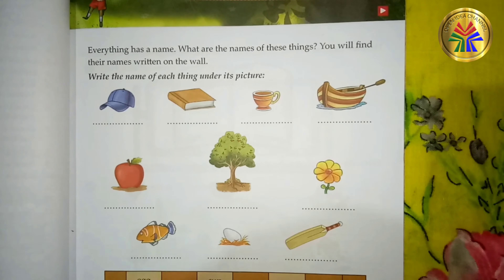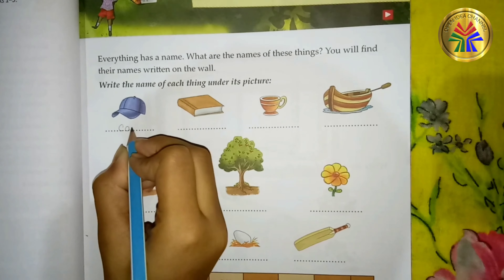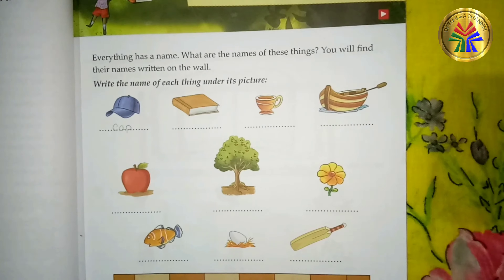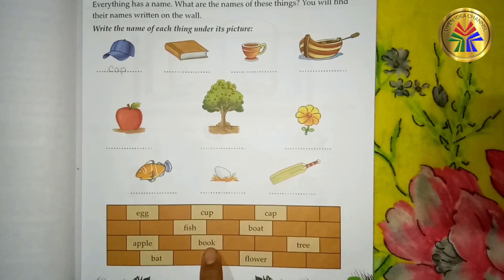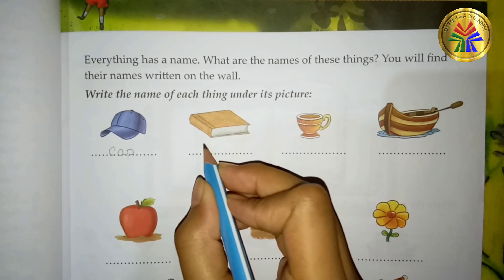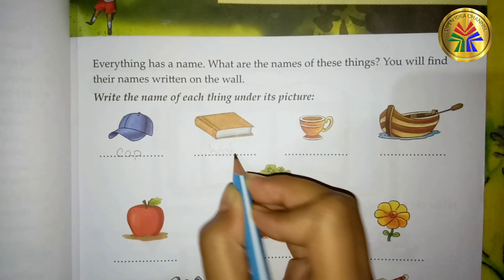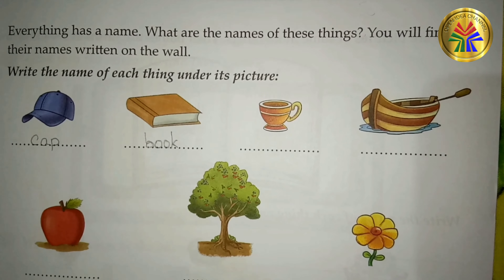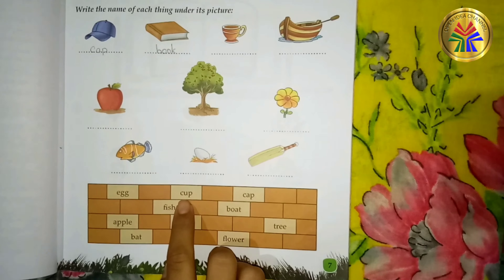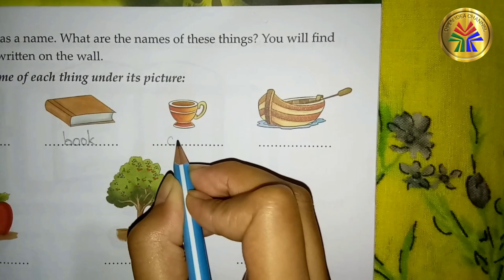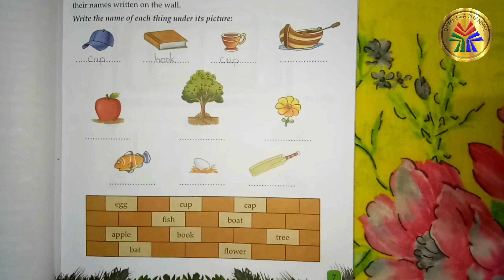Hello friends, welcome back to my channel. Today I have come back with another educational video. In this video, I am going to explain and tell the answers of Chapter 1: Names of Things, from the book The New Grammar Tree, Class 1. So let's start. One — Names of Things. Everything has a name. What are the names of these things? You will find their names written on the wall. Look at the pictures and find their names from the wall given below.